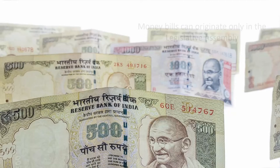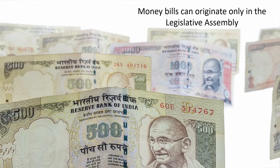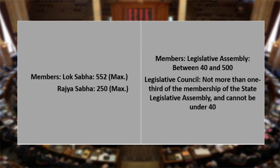If a bill introduced in the legislative council is passed by it but the legislative assembly rejects it or passes it with modifications unacceptable to the council, the bill comes to an end. However, if a bill originates in the assembly and is rejected or modified unacceptably by the legislative council, it does not come to an end — but there is no provision for a joint sitting, and the decision of the assembly is deemed final. In case of money bills, they can originate only in the legislative assembly. The maximum members of Lok Sabha is 552 and Rajya Sabha 250. Members of legislative assemblies range between 40 and 500, while the legislative council cannot exceed one-third of the state assembly membership and cannot be under 40.